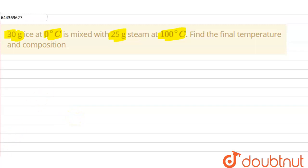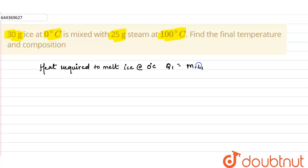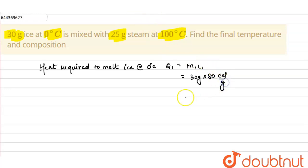Calculate the heat required to melt ice at 0°C, called Q1. That will be mass of ice multiplied by latent heat. The mass of ice is 30 grams, and the latent heat is 80 calorie per gram. So Q1 = 30 × 80 = 2400 calories.